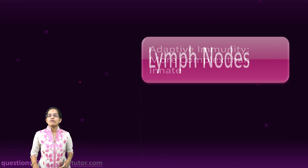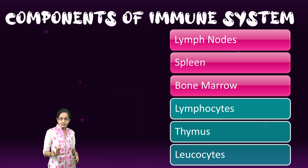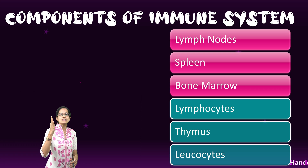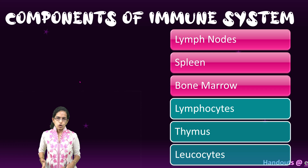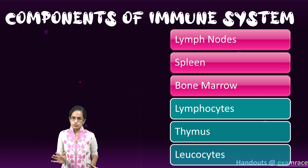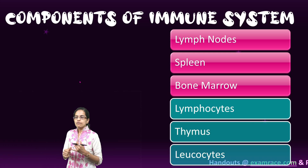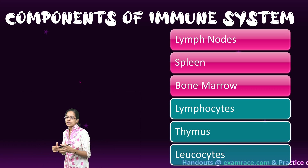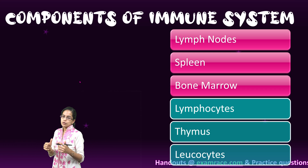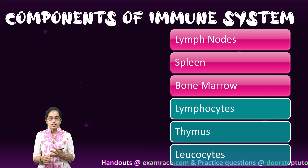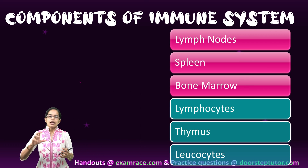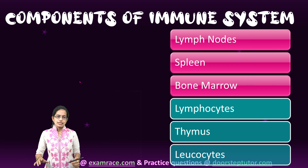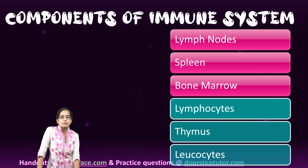The components of the immune system are interesting. There are six components: lymph nodes, spleen, bone marrow, lymphocytes, thymus, and leukocytes. Let's understand these one by one.